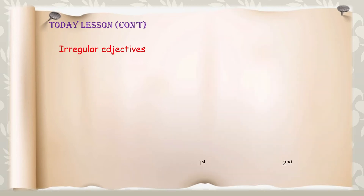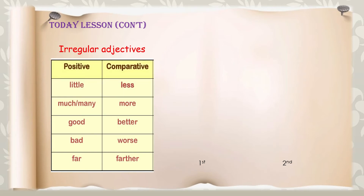There are also some irregular adjectives where we change the whole word — we don't add -er, change -y to -ier, or add 'more'. For example: 'little' changes to 'less', 'much' or 'many' changes to 'more', 'good' changes to 'better', 'bad' changes to 'worse', and 'far' changes to 'further'.